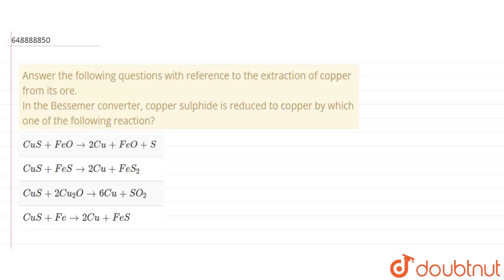The question says answer the following questions with reference to the extraction of copper from its ore. The question is: in the Bessemer converter copper sulfide is reduced to copper by which one of the following reaction?